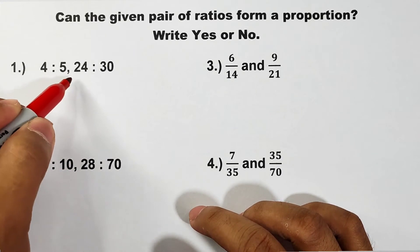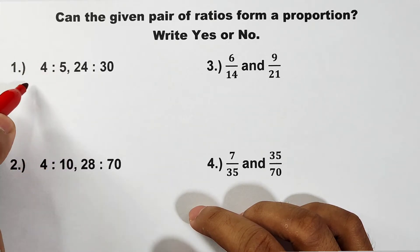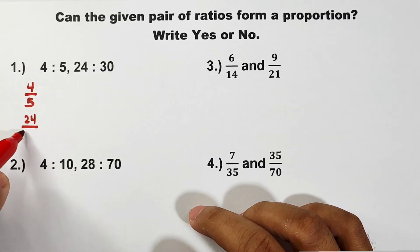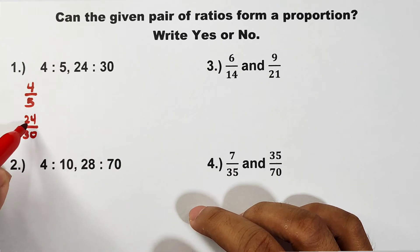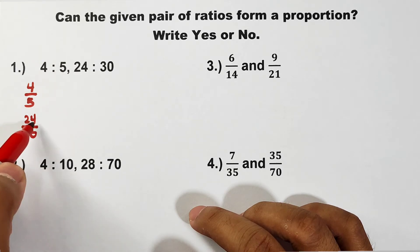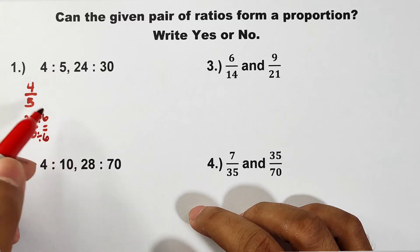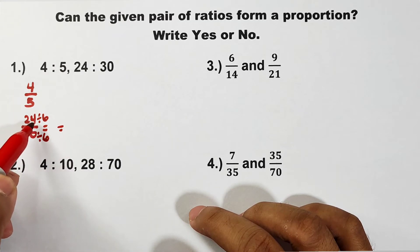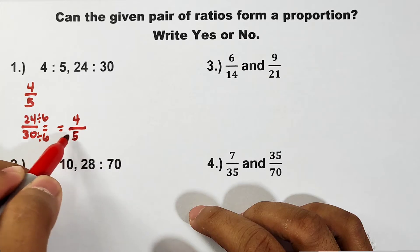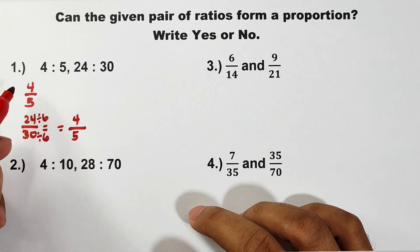Method 1 is to simplify the two ratios. We have 4 over 5 and 24 over 30. 4 over 5 is already in lowest terms. For 24 over 30, we divide by 6: 24 divided by 6 is 4, and 30 divided by 6 is 5. So 4 over 5 equals 4 over 5 — these ratios are forming a proportion.